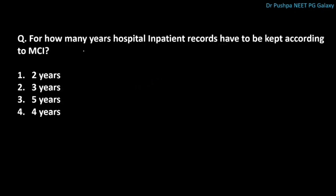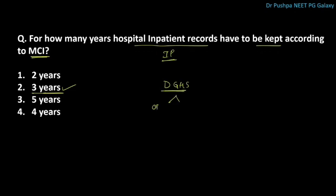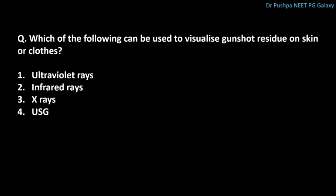For how many years must hospital inpatient records be kept according to MCI? The correct answer is 3 years. According to the Director General of Health Services, OPD records must be kept for 5 years and IPD records for 10 years. Which can be used to visualize gunshot residue on skin or clothes? The correct answer is infrared rays.